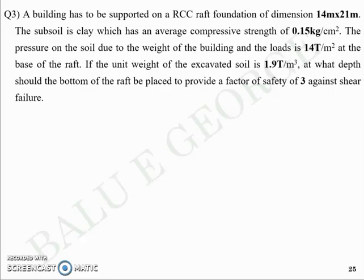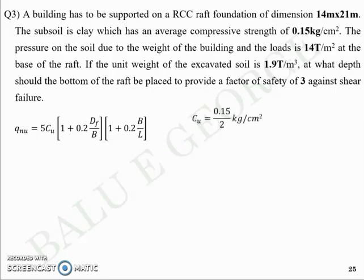Our intention is to calculate the depth at which the raft should be placed for a factor of safety of three against shear failure. The equation we use is: net ultimate bearing capacity Q_NU = 5·Cu × (1 + 0.2·DF/B) × (1 + 0.2·B/L). Since we are given the average compressive strength, cu is half of that value, as discussed in the UCC test — cu is equal to qu/2, the undrained cohesion.